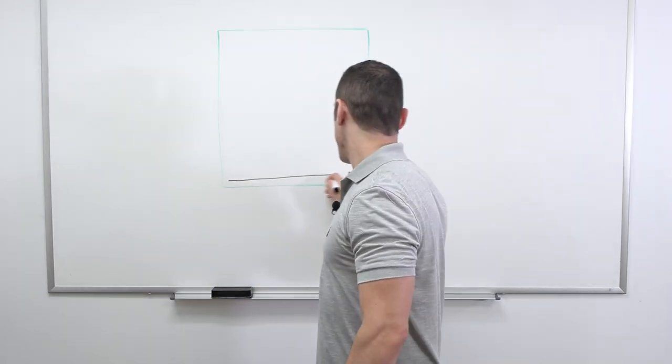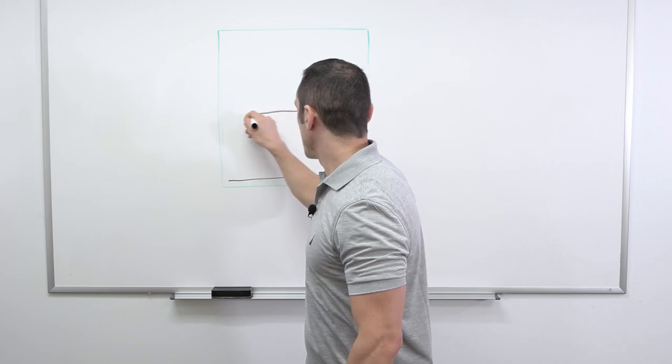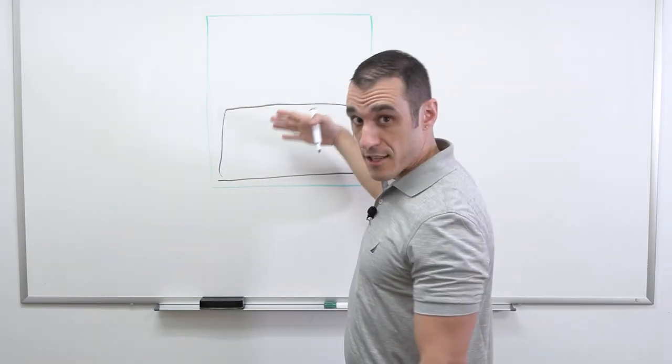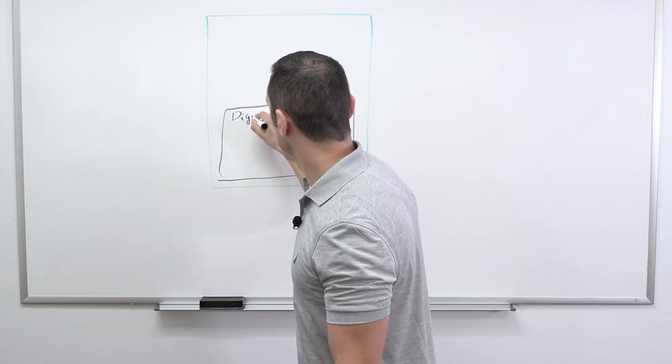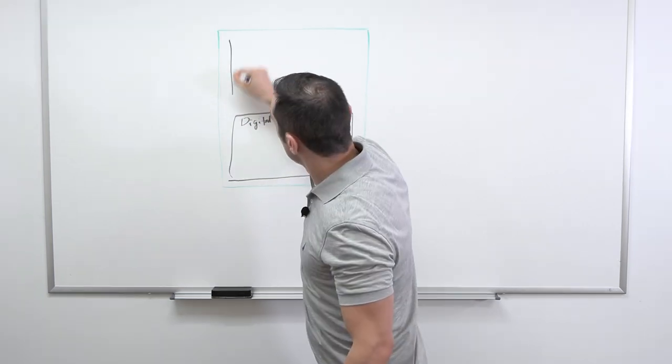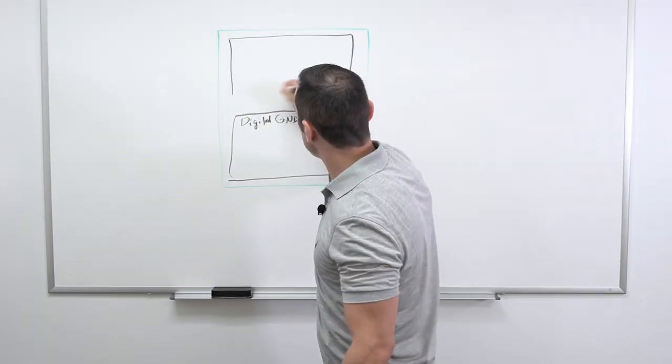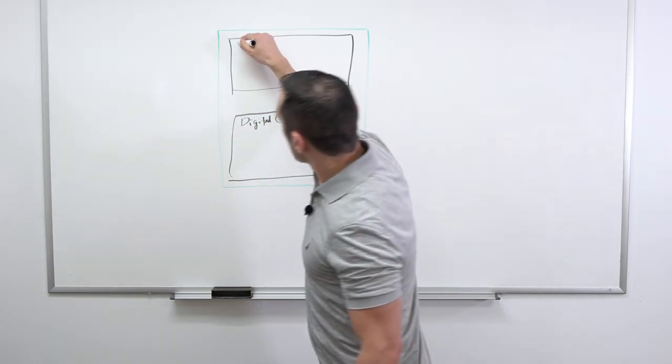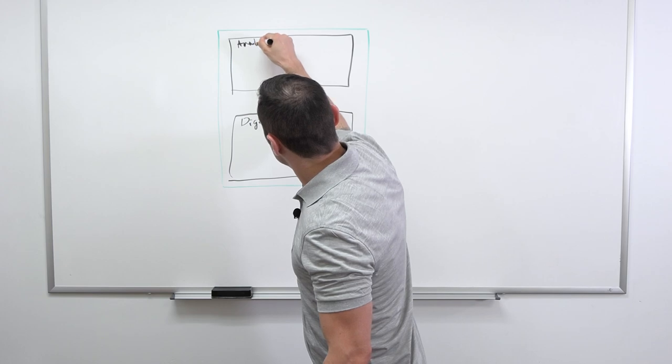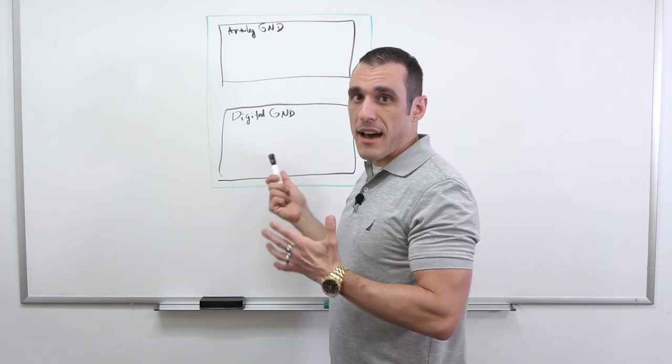So you'll see design guidelines state that you should do something like this. So here we're looking into the PCB from the surface layer. This is my digital ground plane. Then they'll state to have a second ground region or ground plane, whatever you want to call it, that is your analog ground plane. Initially, if you're thinking about hey, I need to isolate my digital signals from my analog signals.